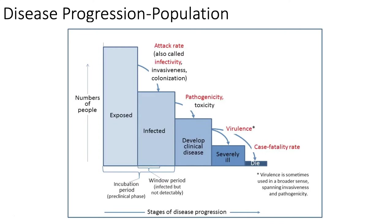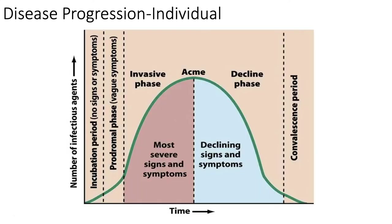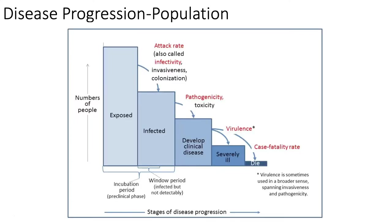Looking at the people actually infected, we can say some of them only have vague symptoms and are never really that sick. But a lot of people might progress to actual signs and symptoms that we classify as clinical disease. We call that pathogenicity — it's the pathogen's ability to actually trigger specific symptoms that medical professionals recognize as specific for that disease. So we've gone from how many people were exposed, to how many were actually infected, to how many developed clinical disease. Those aren't always 100% — it just depends on the virus.